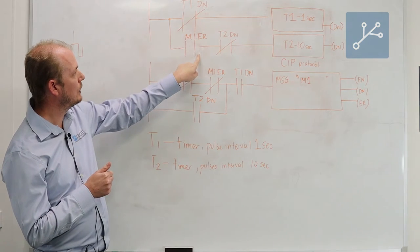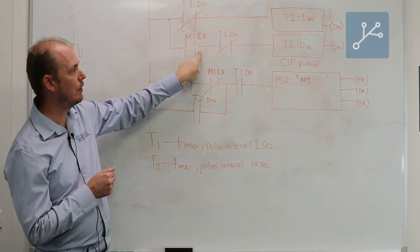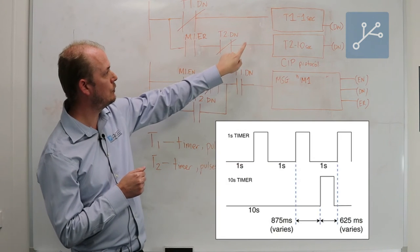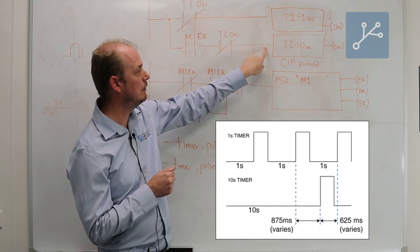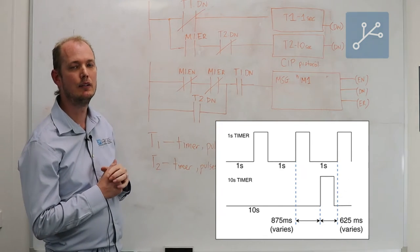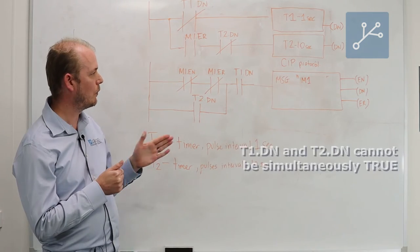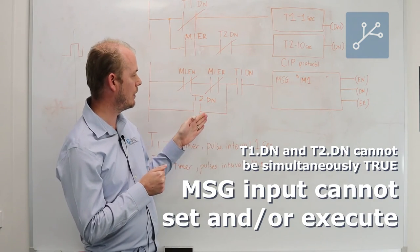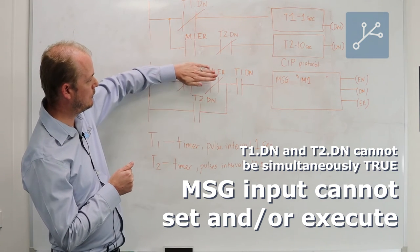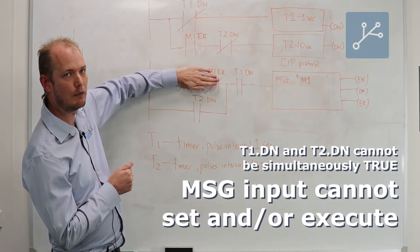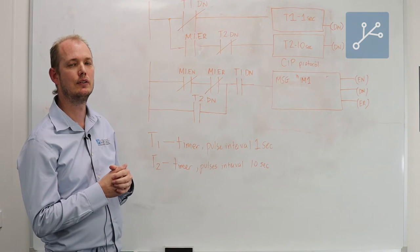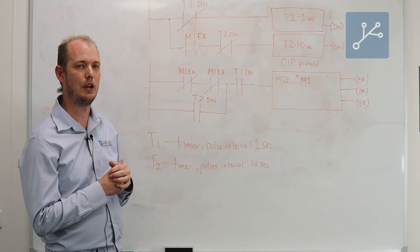In this case we can see that when there is an error problem with the message instruction, these two timers will not actually be in sync with each other, therefore the done bits for each timer won't be in sync, therefore this message instruction will never be able to transition from off to on. Bear in mind this port is no longer available. So the question is: how do we get this message to execute again in the state of an error?